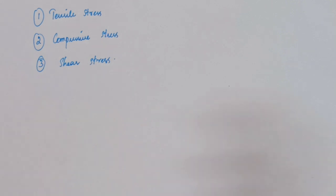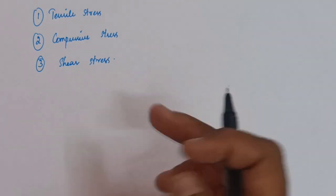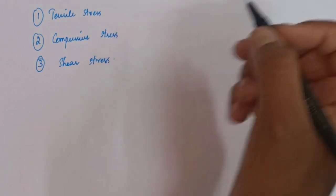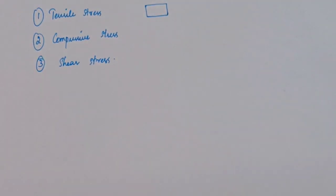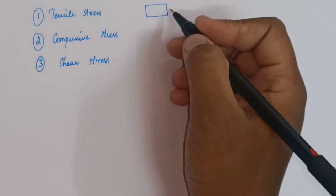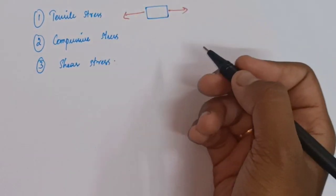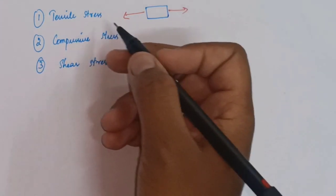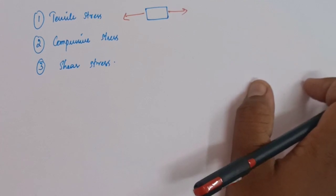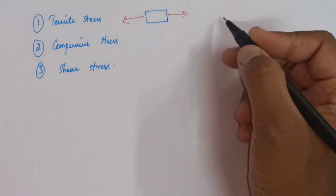There are three types of stresses: tensile stress, compressive stress, and shear stress. Tensile stress is when two sets of forces act on an object away from each other — one on this side and one on the other side. The internal stress created at that moment is tensile stress, formed just because of pulling away from each other.